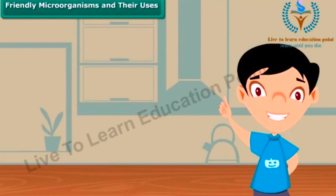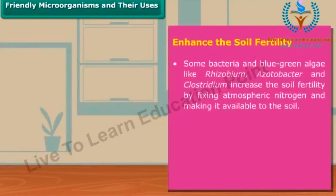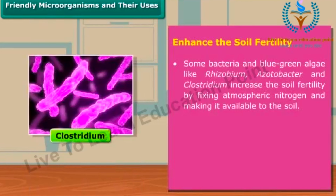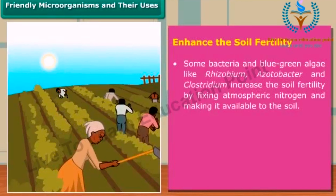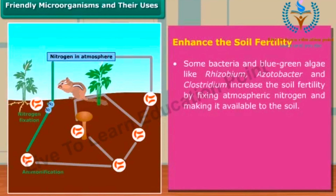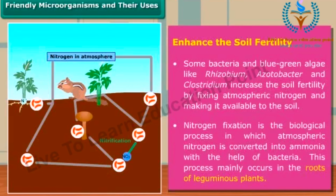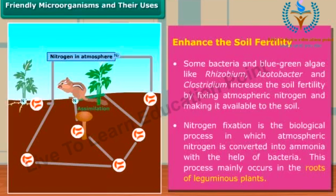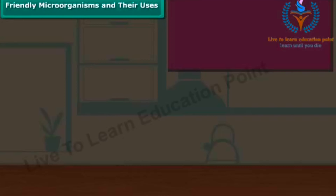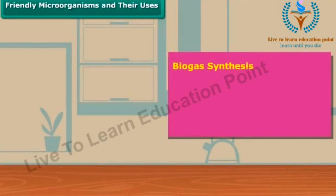Now let me tell you what other benefits are provided by useful microorganisms. Some bacteria and blue-green algae increase soil fertility through the atmospheric nitrogen fixation process. Nitrogen fixation is the biological process in which atmospheric nitrogen is converted into ammonia. There are also other friendly anaerobic bacteria that are used in the synthesis of biogas.